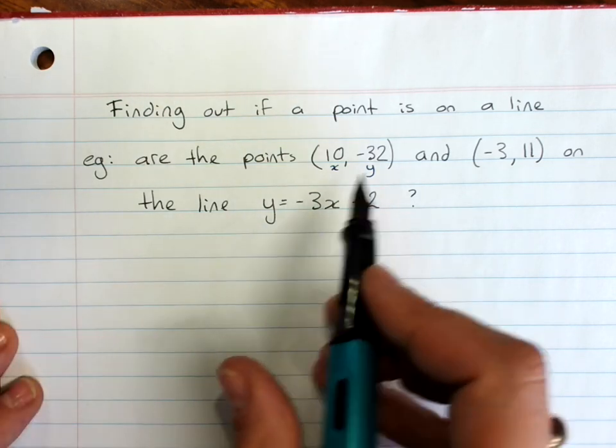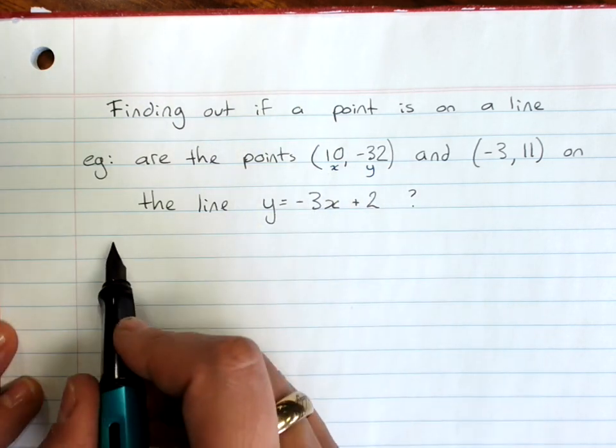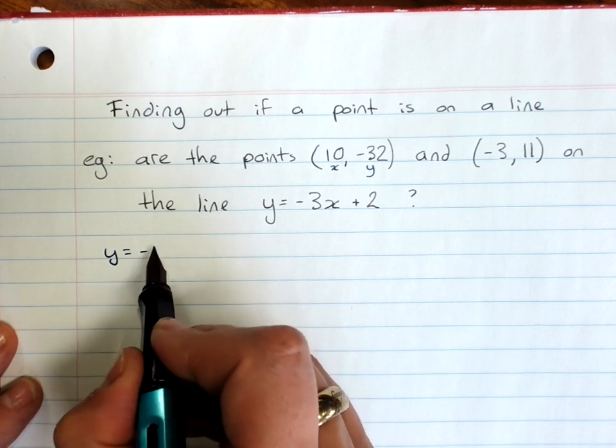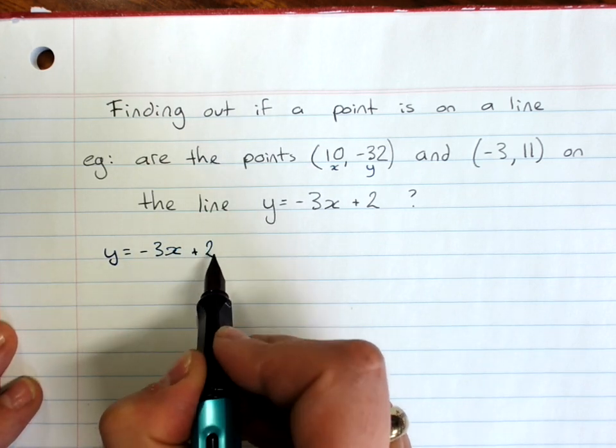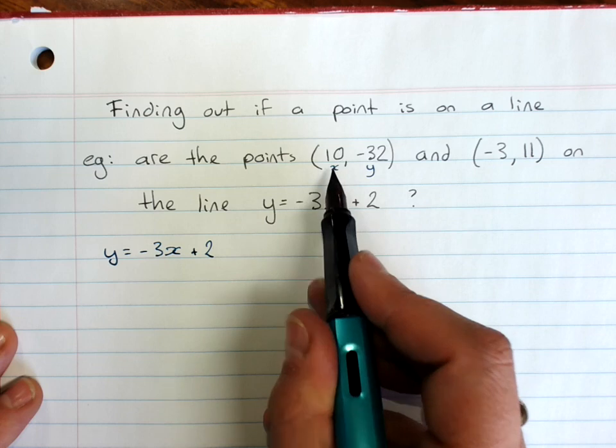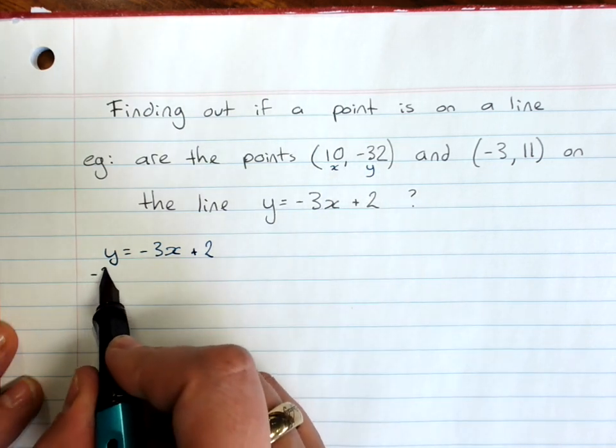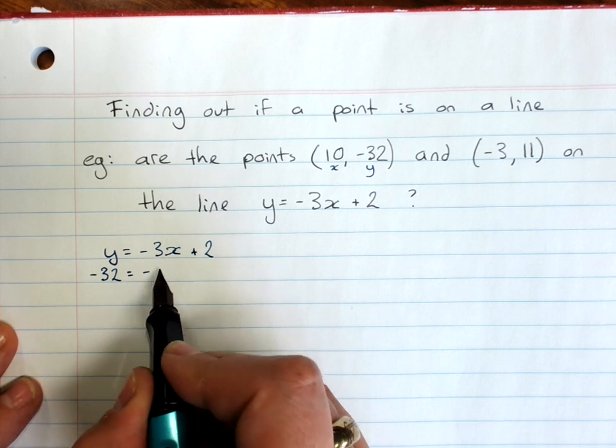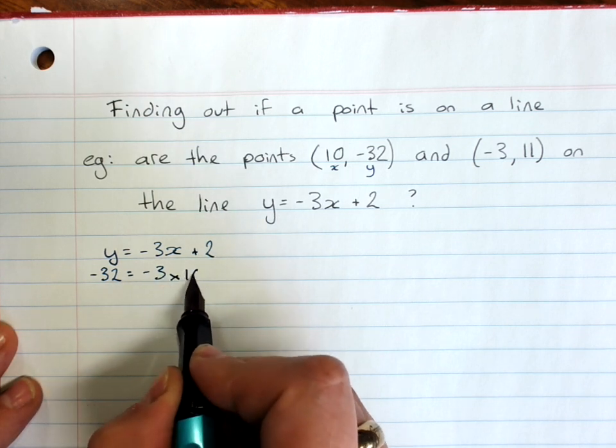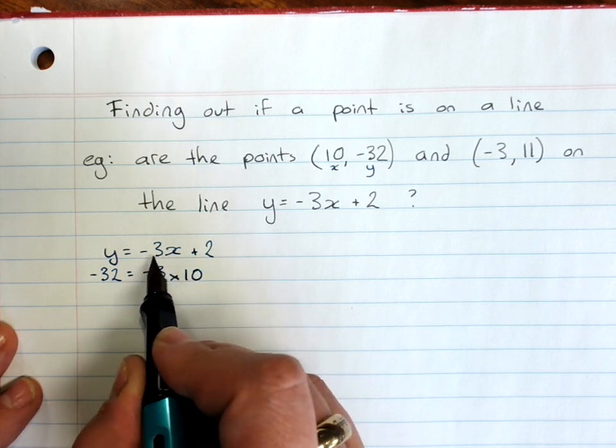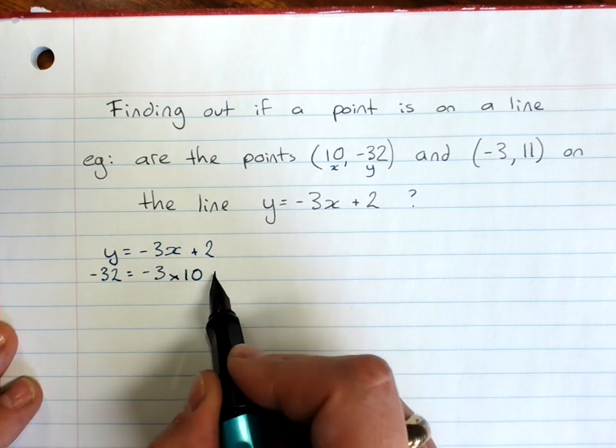So let's do the first point. Here I'm going to write the line and substitute in 10 where I've got x and negative 32 where I've got y. Negative 32 equals negative 3 times 10, because negative 3x is negative 3 times x, plus 2.